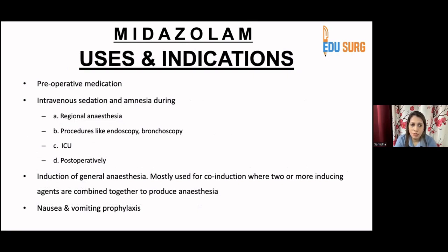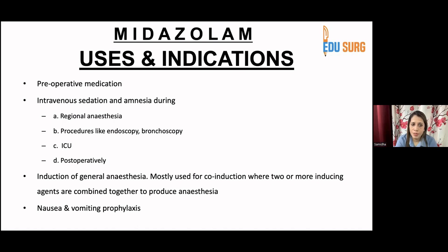Uses and indications include preoperative medication, IV sedation and amnesia — for example when giving regional anesthesia such as spinal, epidural, or a nerve block. It can be used post-procedurally or before the procedure in very anxious patients to improve cooperation. It is also used during endoscopy, bronchoscopy, in the ICU, and post-operatively for agitated patients or to prevent children from pulling out drains and IV lines. For induction of general anesthesia, it is mostly used as a co-induction agent where two or more inducing agents are combined. It may also help with nausea and vomiting.